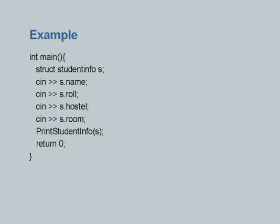Having defined this struct, we read name, role, hostel, and room — the order in which we read is completely immaterial. Each one of these four components is well identified and tagged to a particular declared variable by putting that variable name followed by a dot. If we have read this information and want to print it, I have written a small function called print_student_info, passing a structure variable to it.